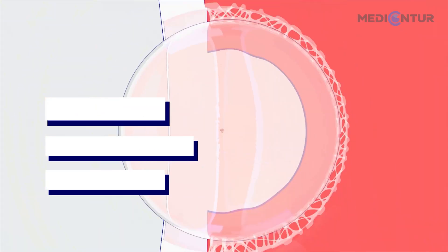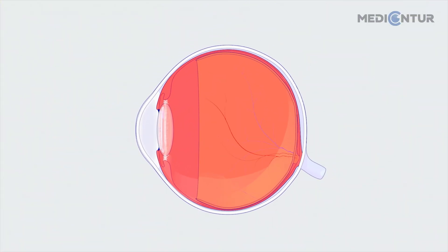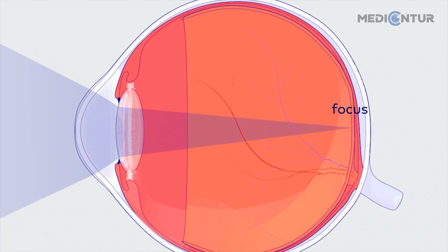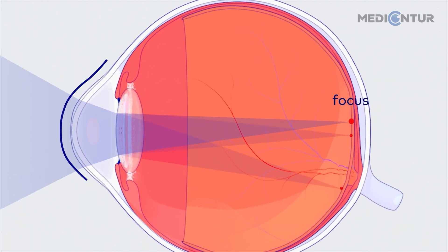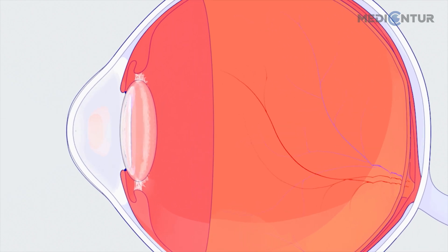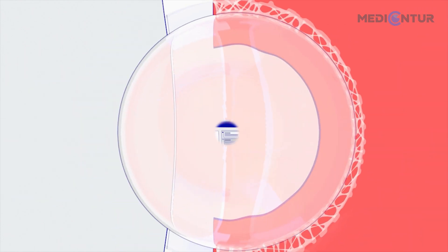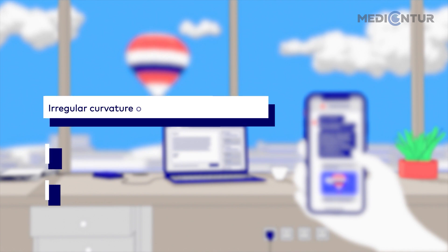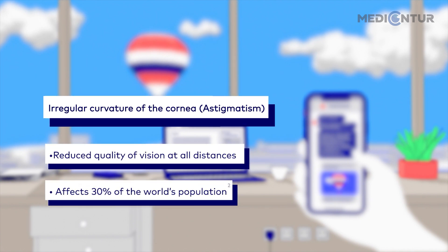Blurry vision can also be caused by astigmatism. This is mostly owed to an irregularly shaped cornea, which causes the incoming light to distort. Astigmatism affects the quality of vision at all distances, and an estimated 30% of the world's population is affected by it.